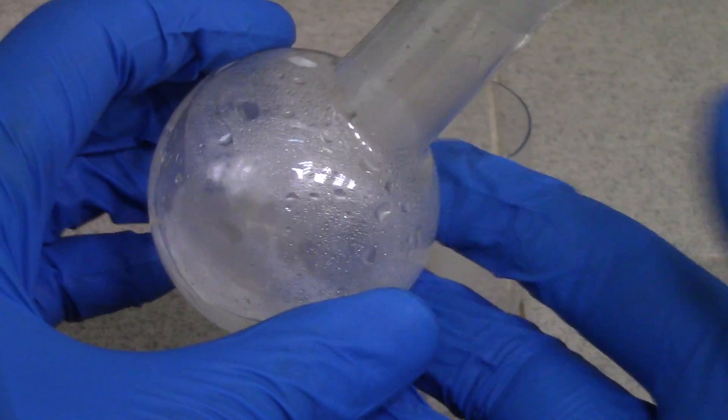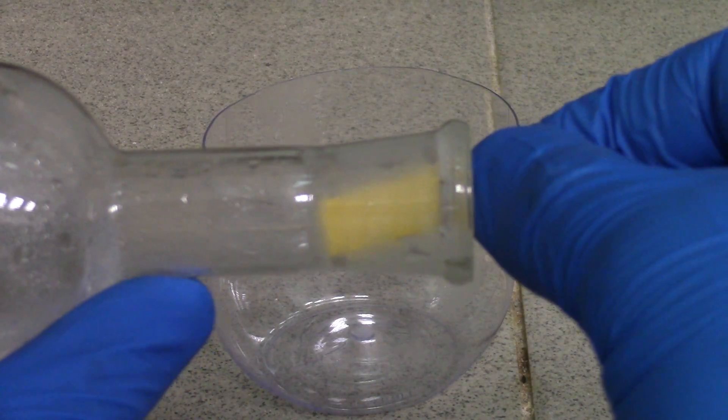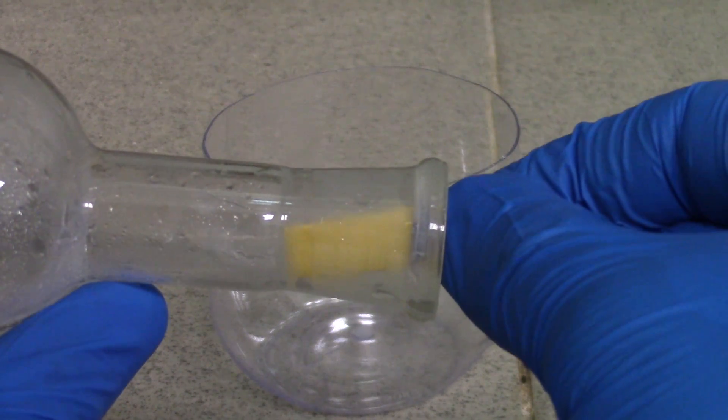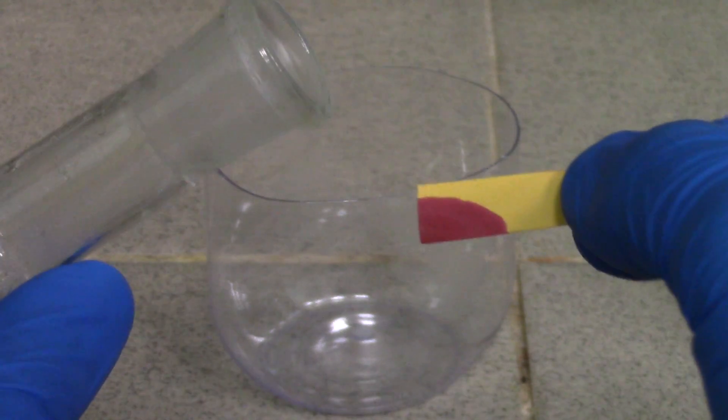Oh, the flask becomes a little bit hot. And finally, I have tested its acidity using indicator paper. This results in pH above 2.0.